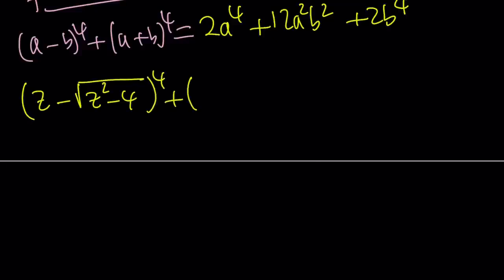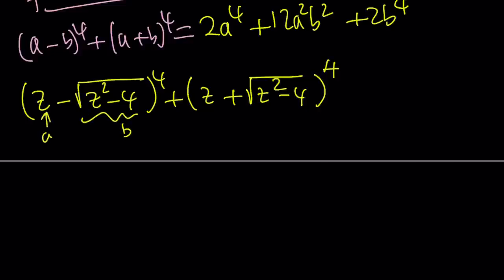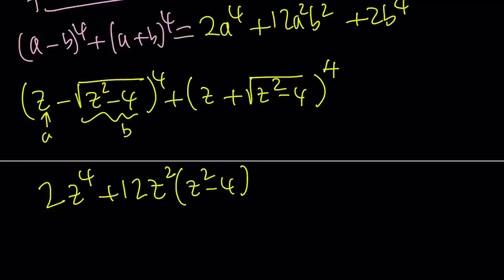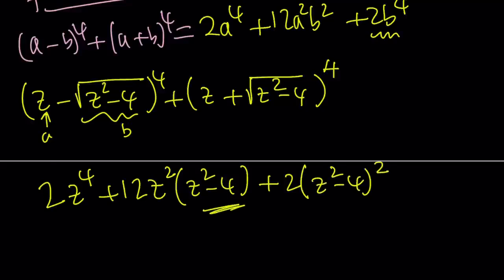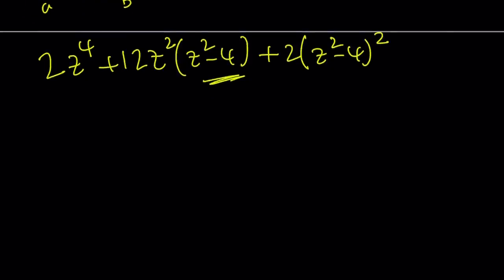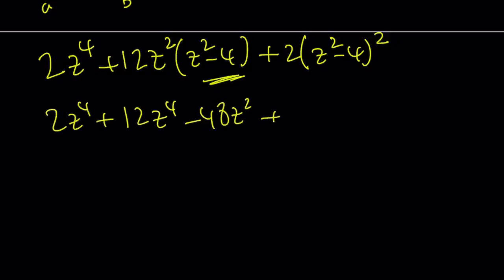So I want to add this to the fourth and this to the fourth — they're conjugates, just like a minus b and a plus b, where a is z and b is the square root of z squared minus 4. What's the sum? 2a to the fourth: so 2z to the fourth, plus 12a squared times b squared, which is z squared times z squared minus 4, plus 2b to the fourth, where b to the fourth is z squared minus 4 squared.